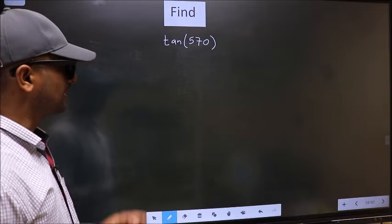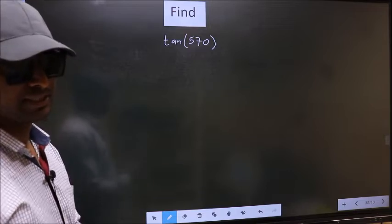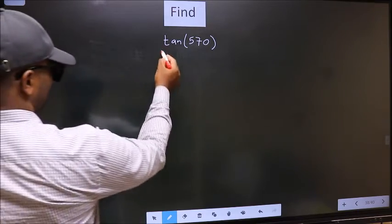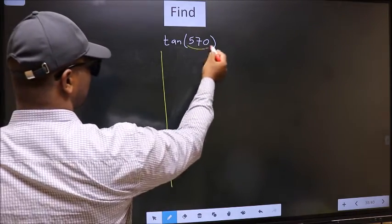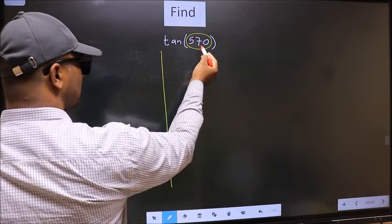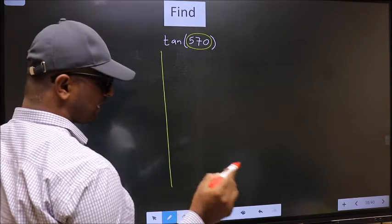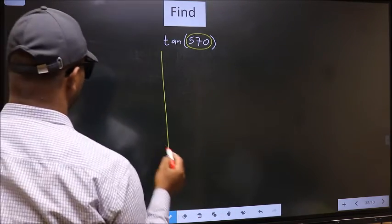To find tan 570°, we should follow this method. See, here we have 570°. Now you should check: 570 lies between which two multiples of 180? What I mean is...